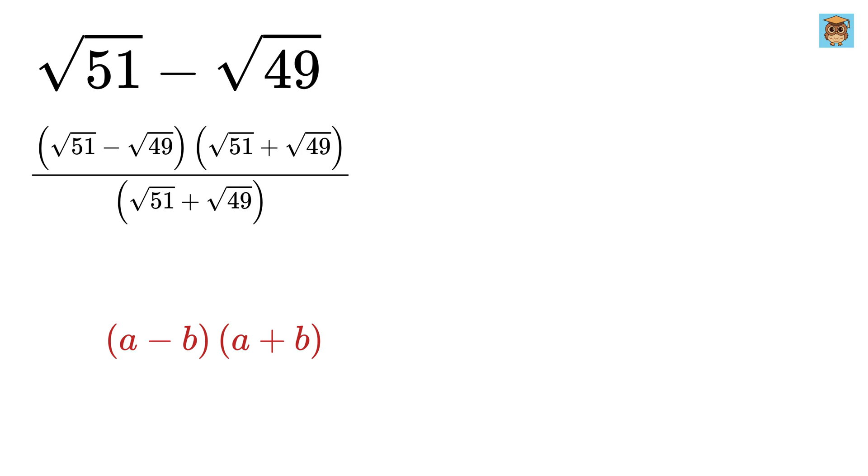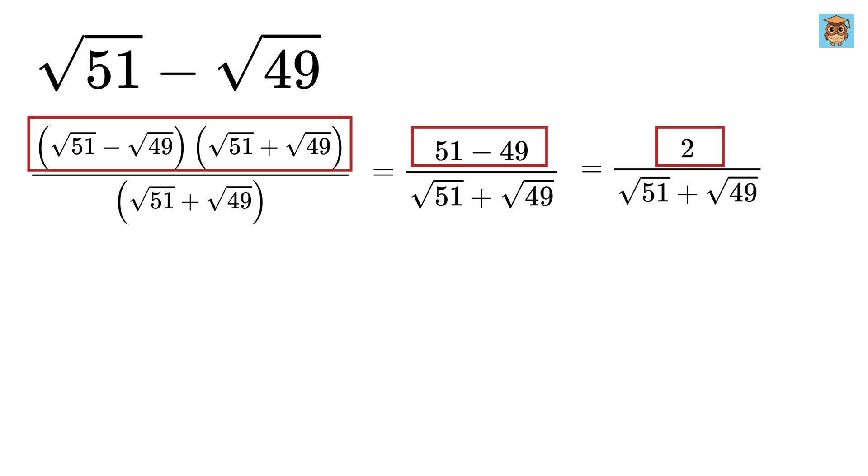Using a plus b multiplied by a minus b as a square minus b square, the numerator will be 51 minus 49 or 2, and the denominator will remain as it is.